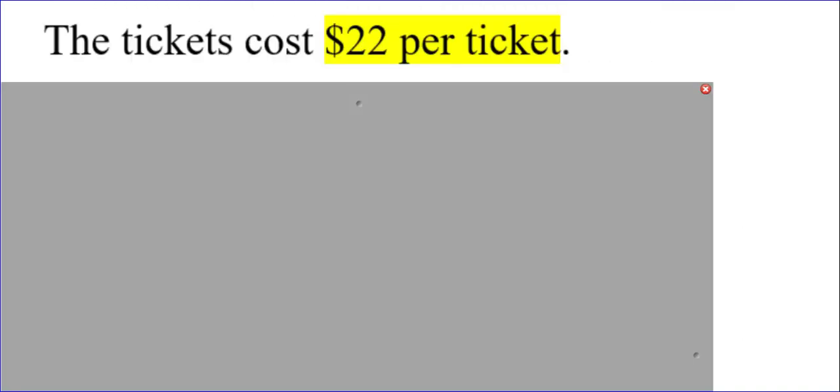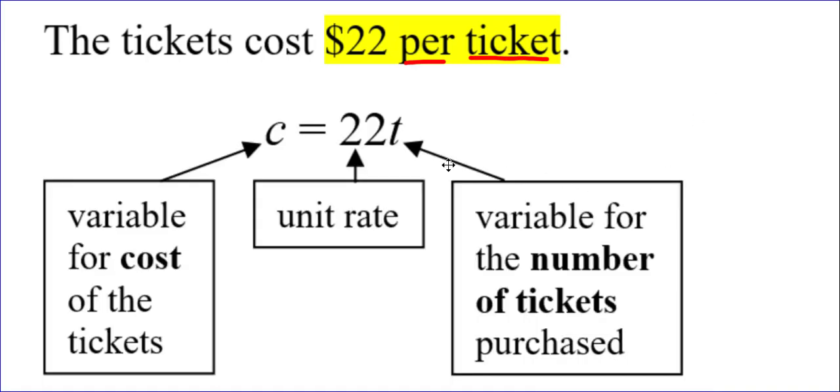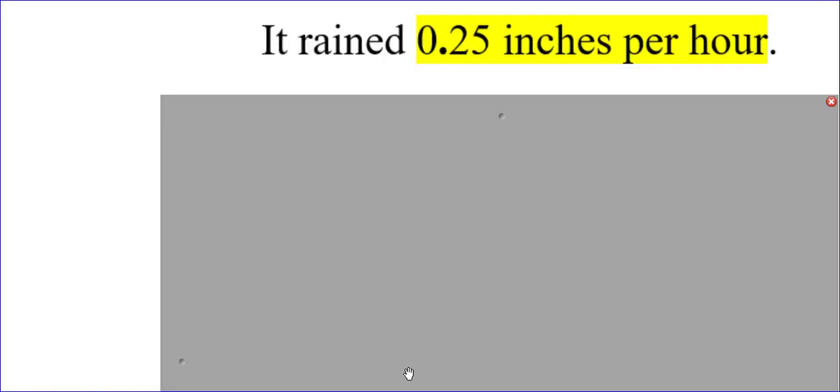Let's look at more examples. If the tickets cost $22 per ticket, notice that per ticket means times the tickets. So that would be 22 times t. What does that equal? We're talking about what the tickets cost, so that equals our variable c. Notice the 22 is the unit rate. We have two variables: c for the cost of the tickets, t for the number of tickets being purchased.